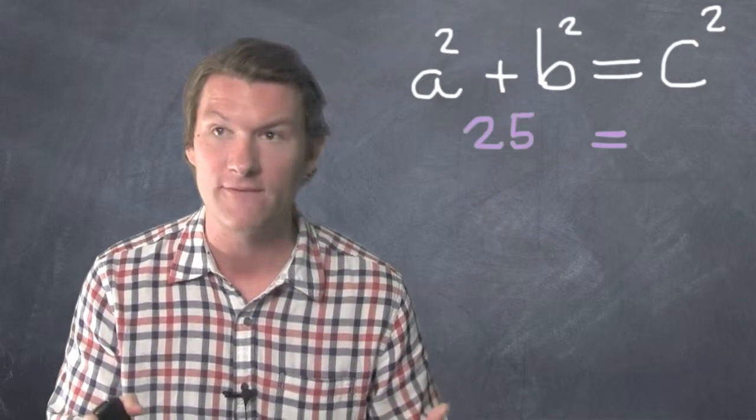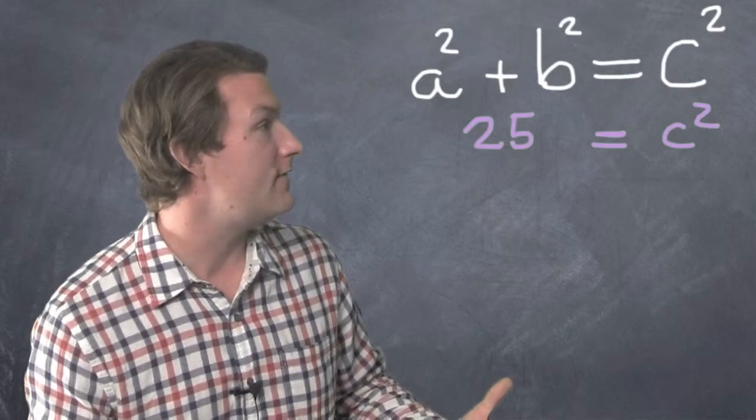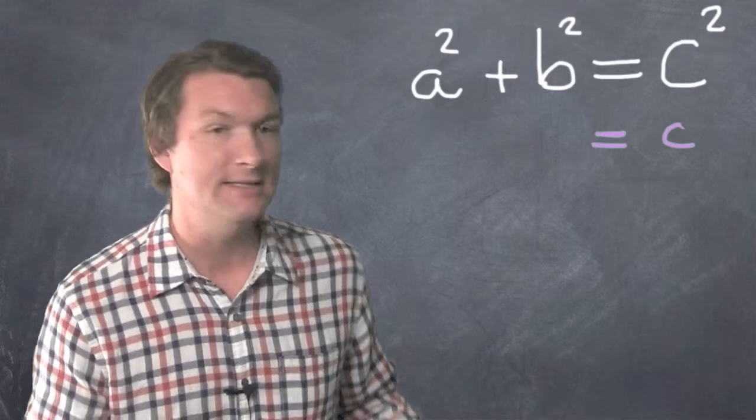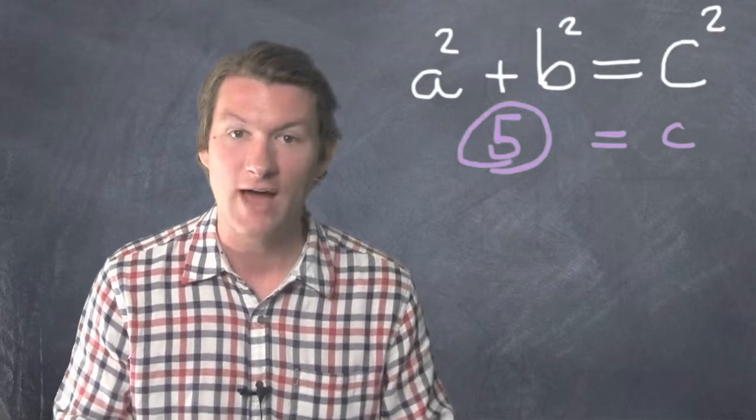So 9 plus 16 is 25. So 25 is C squared. That means that C is 5, because 5 times 5 is 25.